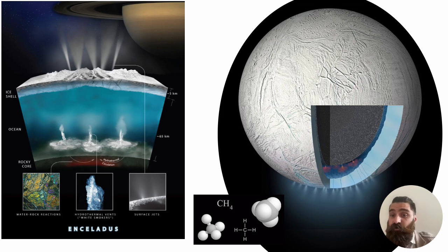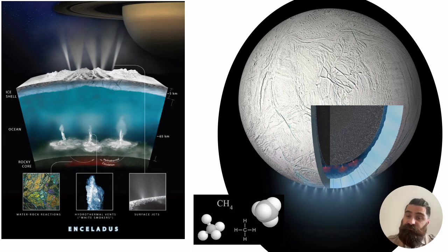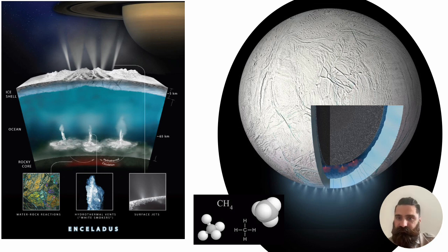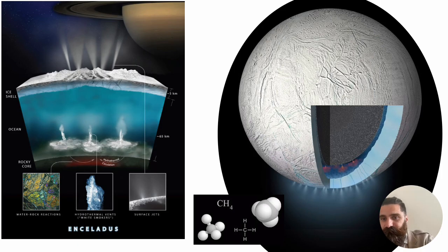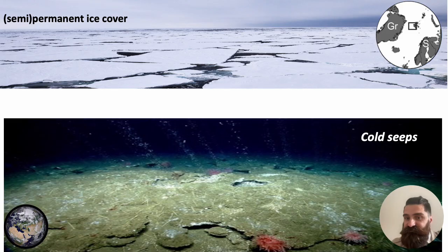Enceladus has a core with geothermal energy that can sustain hydrothermal circulation. It has a shell of ice and a salty ocean underneath — exactly like ours — and at the interface between the rocky core and the ocean, you have hydrothermalism. We've seen abundantly during this course that black smokers, hydrothermal vents, and cold seeps are very interesting for astrobiological study, and we thought we have similar conditions on our planet — for instance in the Arctic, where you have a semi-permanent ice cover sitting on top of an ocean, with cold seeps and hydrothermal vents at the bottom.